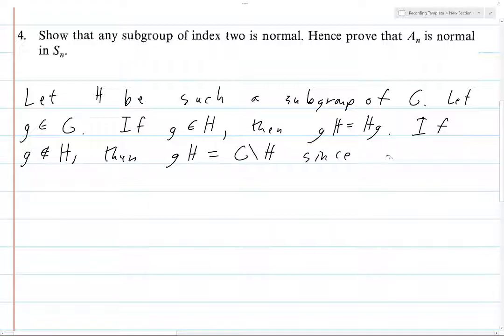Since this is because the index is 2. And likewise, the same holds for right cosets.